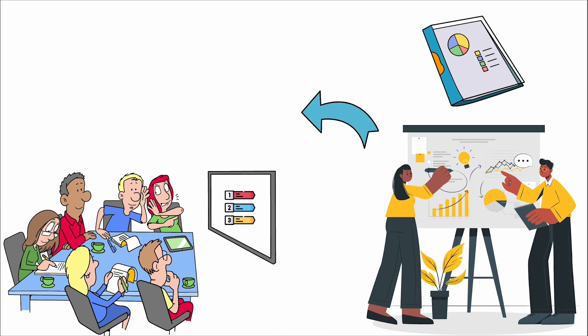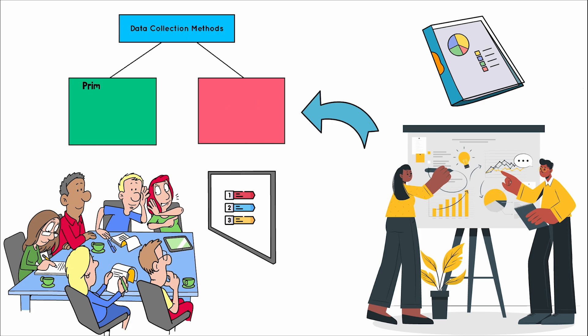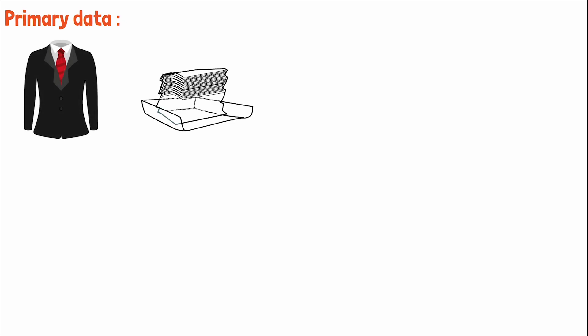It will determine whether the research will rely on primary data, which is gathered firsthand for the specific research purpose, or secondary data, which is pre-existing data used to support the research. Primary data is akin to a custom-made suit, tailored to fit the exact needs of the research.